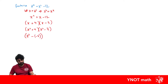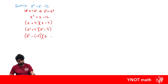z squared minus 3 we can treat as the difference of two squares. Taking the square root of z squared gives us z, and the square root of 3 is just root 3, giving us z plus root 3 and z minus root 3.